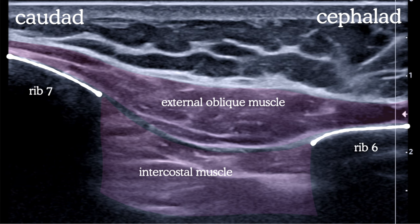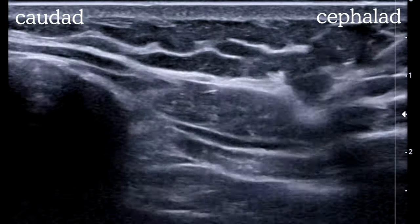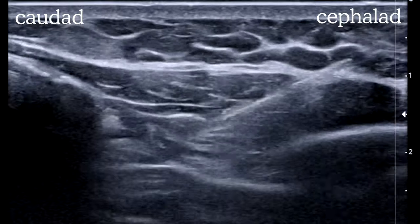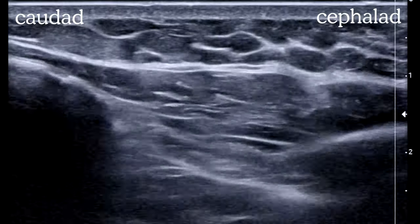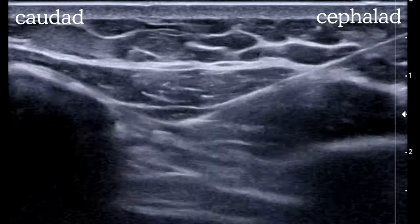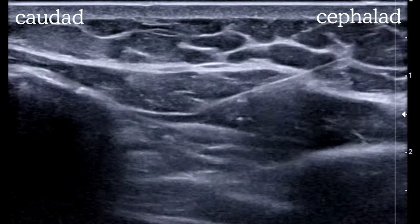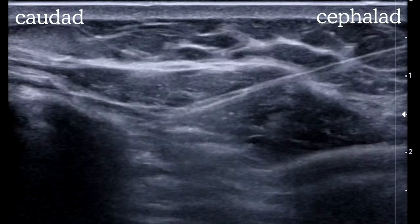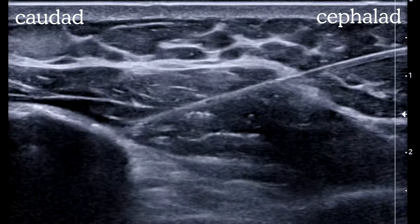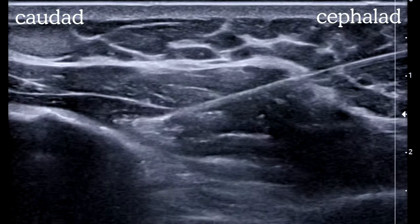Here's that anatomy again pre-block. Now the needle is advancing from the cephalad aspect, entering the external oblique muscle. Our initial injection creates a space, but isn't spreading up and over the rib like we want. We push forward towards the rib and then inject again, this time with good elevation of the muscle. We'll use a total of 20 to 30 mls of dilute local anesthetic per side.